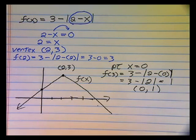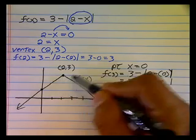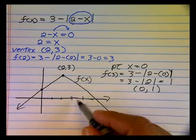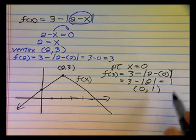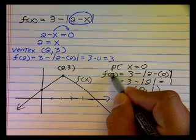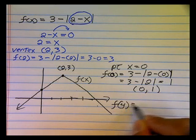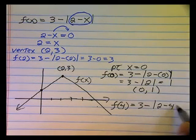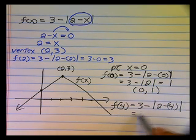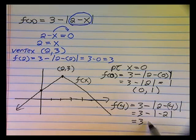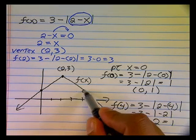My graph makes a V-shape and I started with the vertex (2, 3). I only needed one point because I knew it was going to make a V, and the only way I could make a V was to go in the opposite direction. We can test that this is actually on the graph by choosing another value — let's look at f of four: three minus absolute value of two minus four. Two minus four is negative two, so the absolute value is going to force that to be positive two. I have three minus two, which is one. So the graph at x equals four is one.